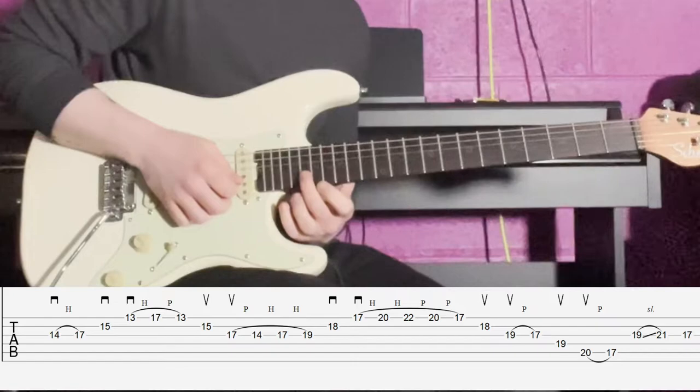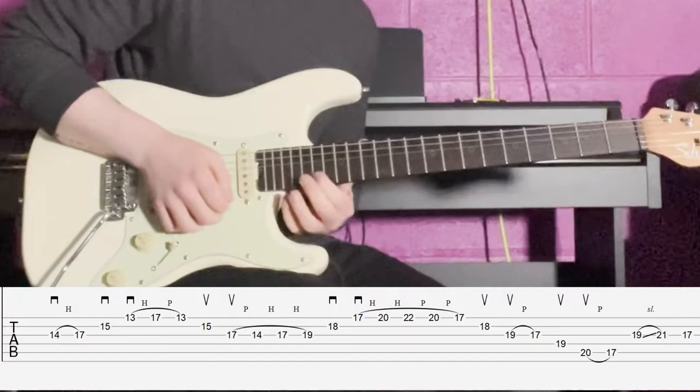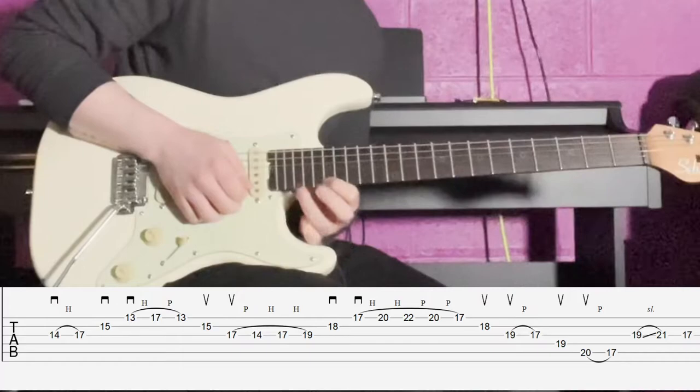Then what we're going to do is hit the 18th fret there on the B string. That is acting as our minor third. Then we're going to do a down pick there on the 17th fret on the high E string, which is acting as a perfect fifth.